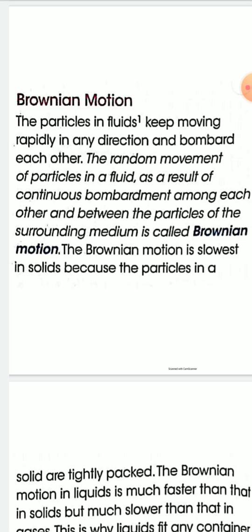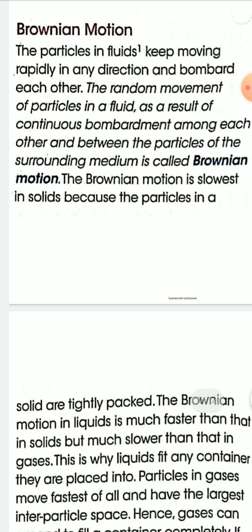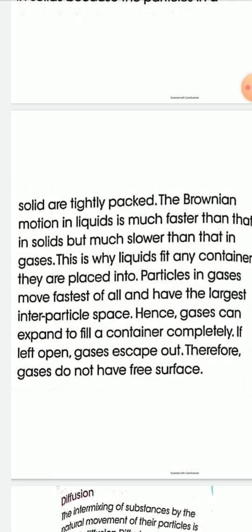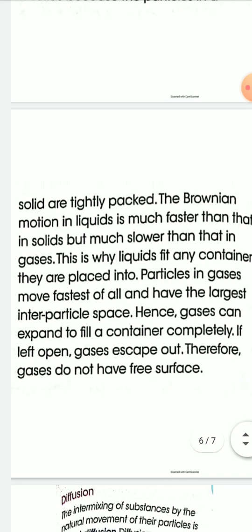The random motion of fluid particles in any direction as a result of continuous bombardment among each other and with the particles of the surrounding medium is known as Brownian motion. Brownian motion is maximum for gases and minimum for solids. It is slowest in solid because the particles are highly packed, much faster in liquid than solid, but much slower than in gases.